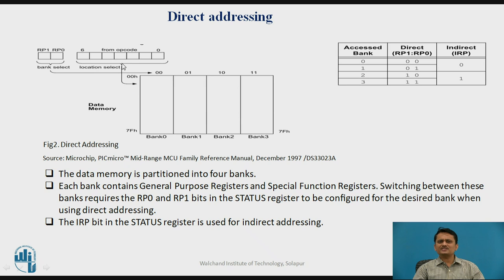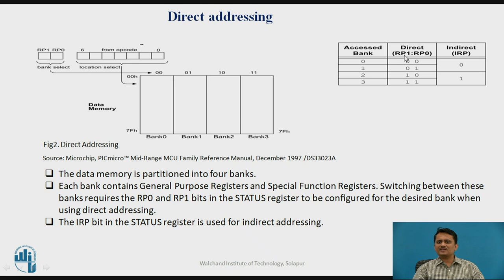In other words, the address in the instruction decides the offset within a bank, and RP0 and RP1 determine which bank you are working in. So direct addressing uses these two bits to select the bank, and the remaining 7 bits decide which location within that selected bank is your operand's address. Based on these status register bit values, you can access a particular bank.